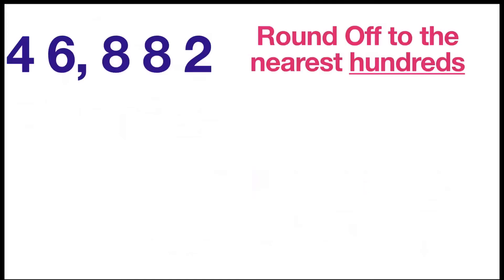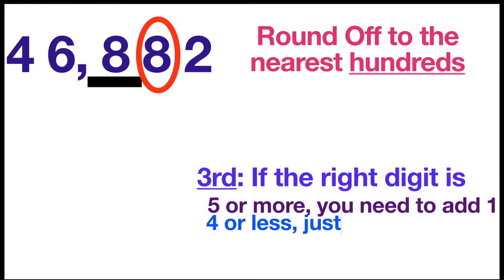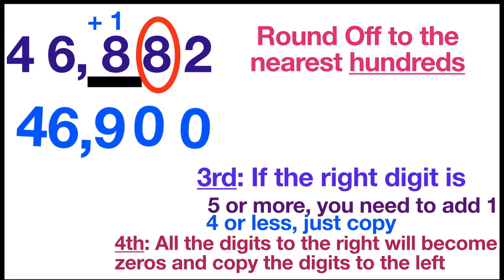Let's have another example: 46,882 round off to the nearest hundreds. Again, let's underline the digit at the hundreds place. Then look to the right. If the right digit is five or more, we need to add one; but if it is four or less, just copy. Since our right digit is digit 8 and it is five or more, we need to add one. 1 plus 8 equals 9. Then all the digits to the right will become zeros, and all the digits to the left we will copy. So the answer is 46,900.